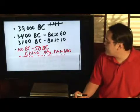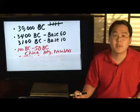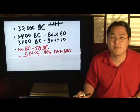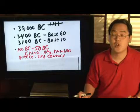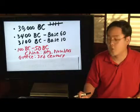From 100 B.C. to about 50 B.C., China came up with the development of negative numbers, but its first Western exposure was around the third century A.D. in Greece.